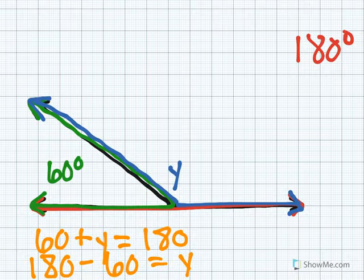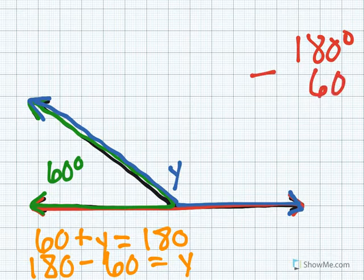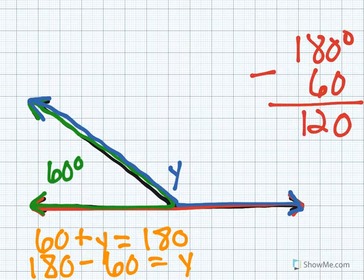To solve for Y I'm going to do exactly that, 180 minus 60. When you do 180 minus 60 you get 120. Angle Y is equal to 120 degrees.